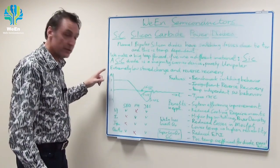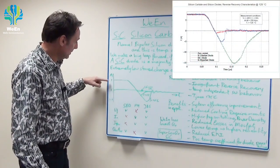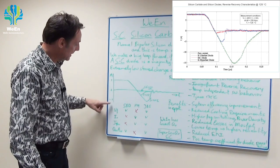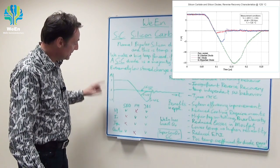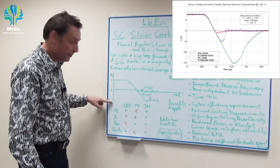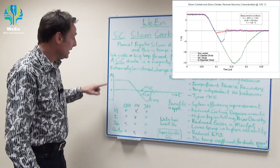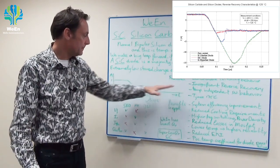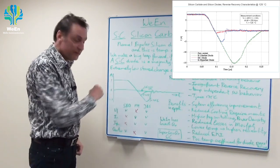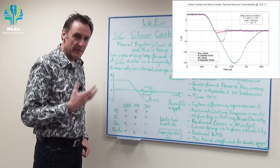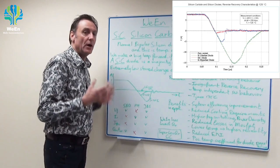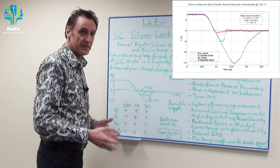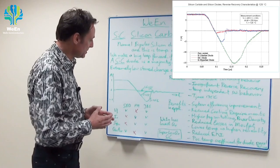The graph shows current vertically — plus one amp and minus one amp, so the negative region is reverse current — and time horizontally. Let's have a look first at the behavior of a silicon diode at high temperature, 125 degrees Celsius.